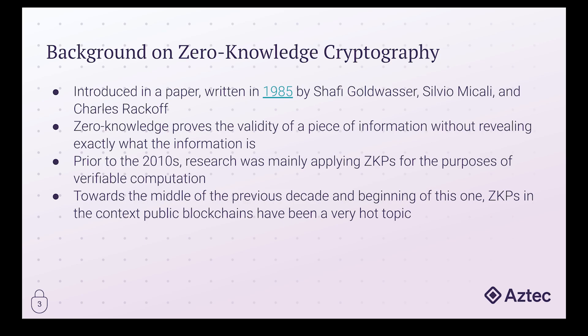So you can see this is a counterintuitive idea at first, but there's a lot of applications, particularly in recent times, that make this technology very promising. Initially after the 1985 paper and up until the 2010s, much of the interest in zero-knowledge cryptography was tailored towards verifiable computation — the idea of offloading a computational process to another party who submits the result along with a proof that the computation was carried out correctly. But with the advent of public blockchains, there are many use cases ideal for zero-knowledge proofs given the decentralized nature, including privacy and scalability.